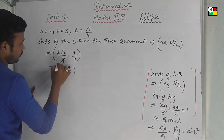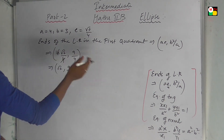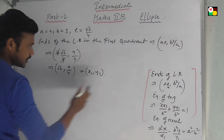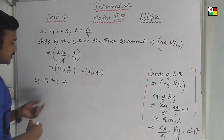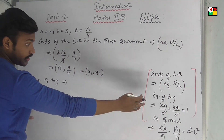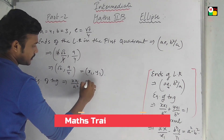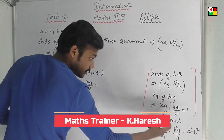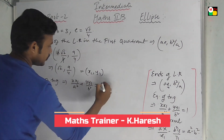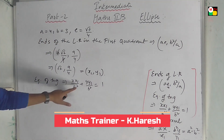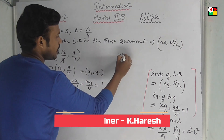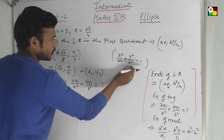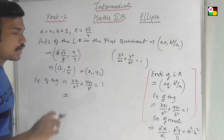The standard equation of the ellipse is x square by a square plus y square by b square equal to 1. I am going to work on the ellipse. I will show you the same thing. So, x square is x times x1.